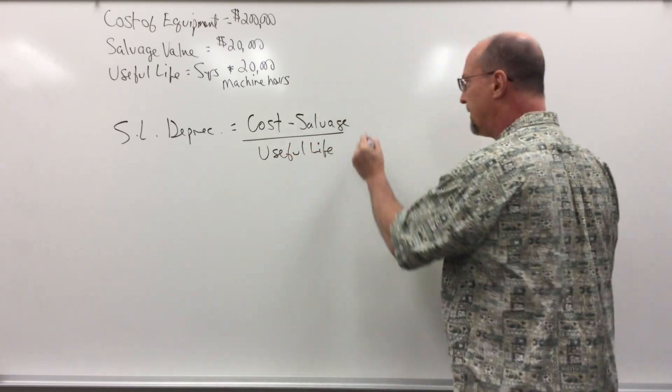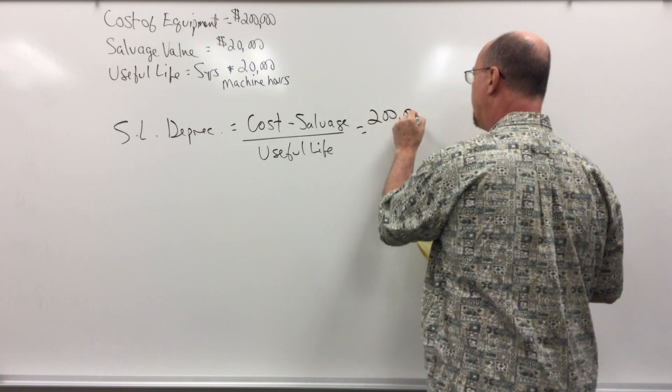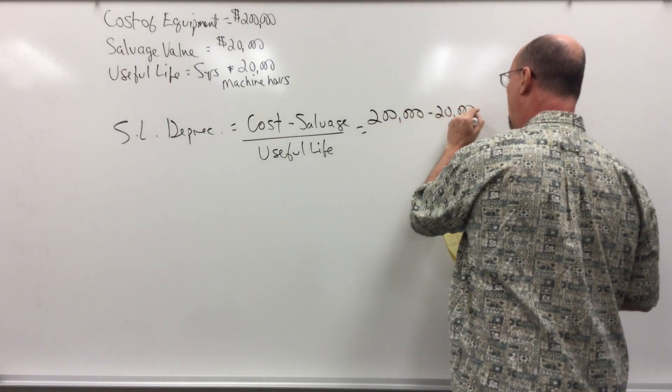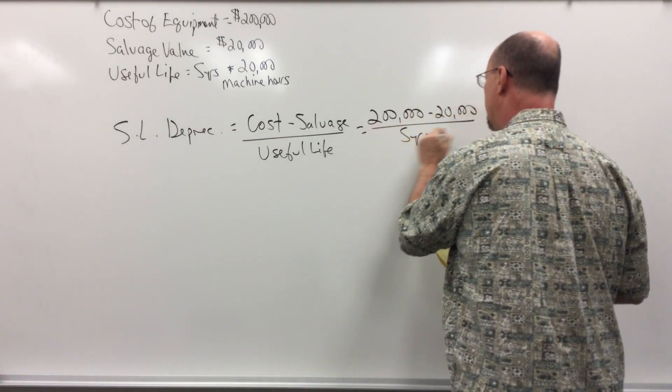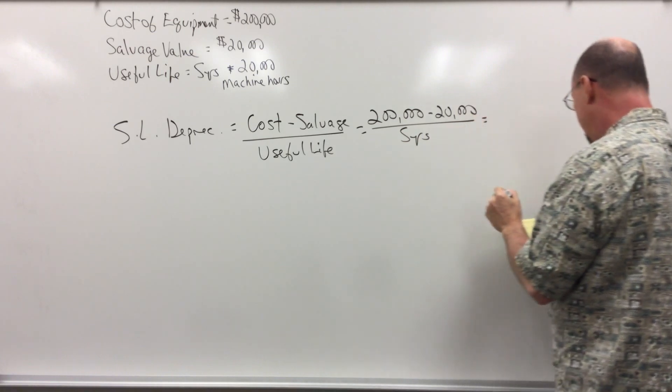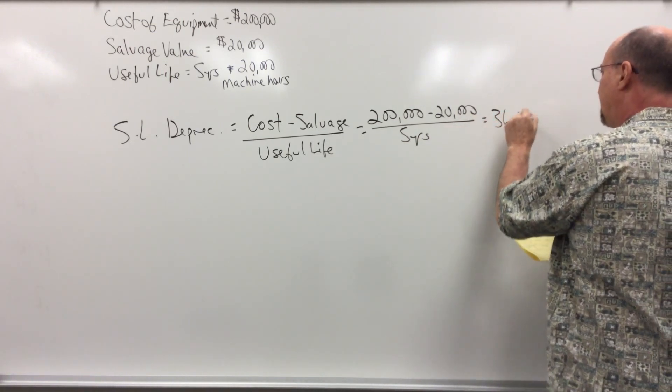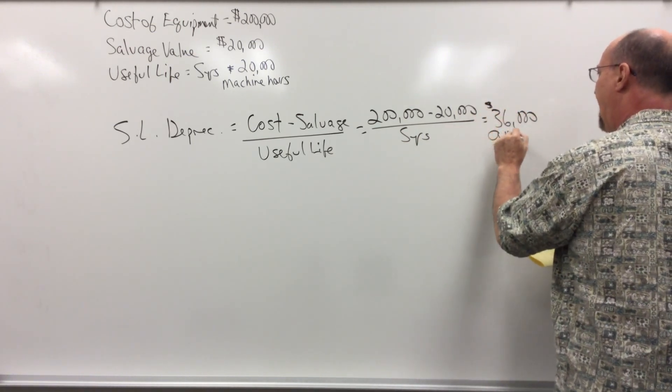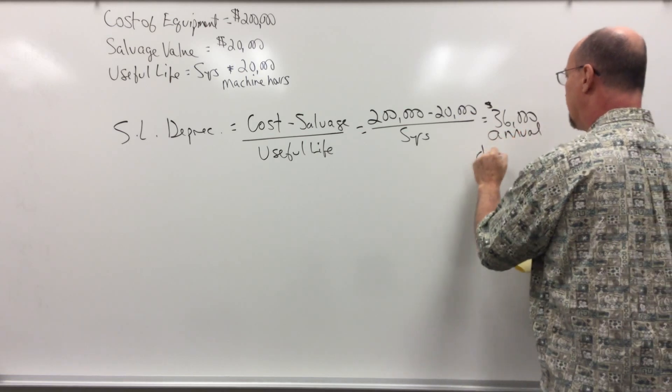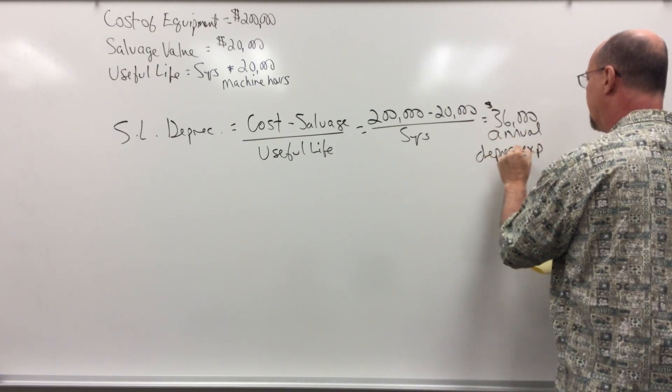If we plug in the numbers, that's 200,000 minus 20,000 divided by 5 years, and that gives us $36,000 of annual depreciation expense.